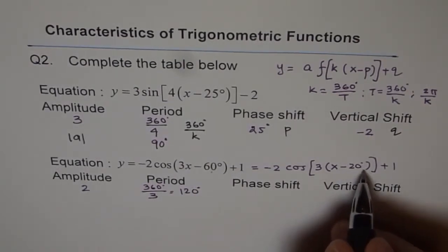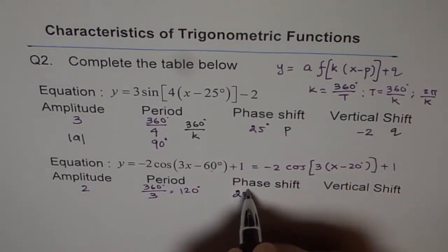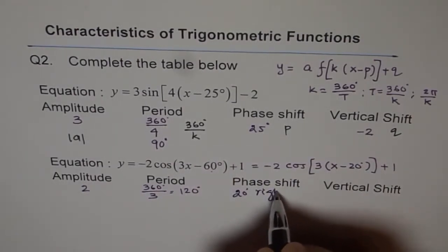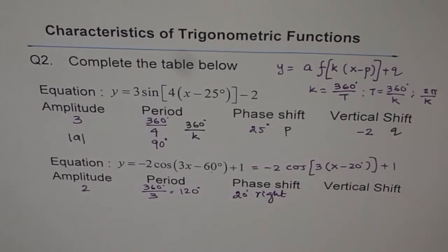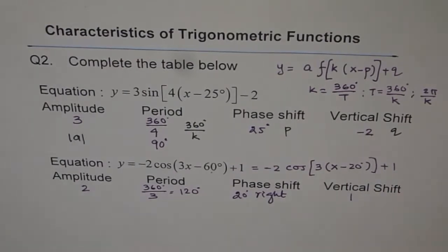Phase shift is 20. Now we say 20. We should actually say 20 to the right. That means plus. So we say 20, 20 degrees. But if we write 20, it means to the right also. Now vertical shift is plus 1. So it is 1 unit up. So there's no need to write plus, but it's kind of understood.